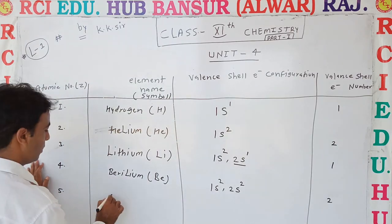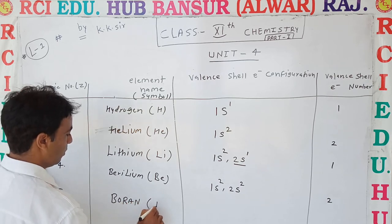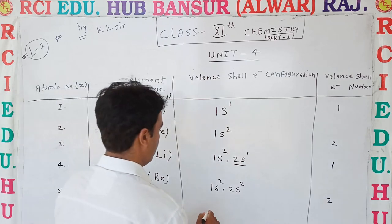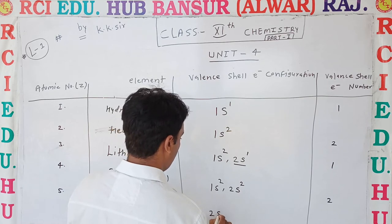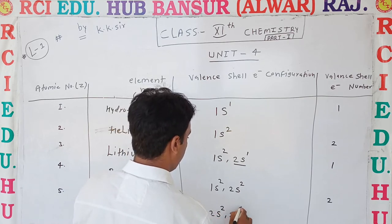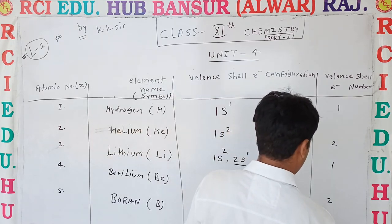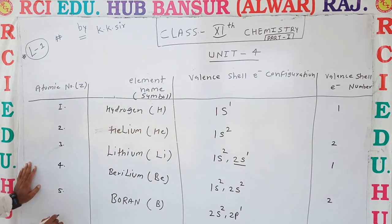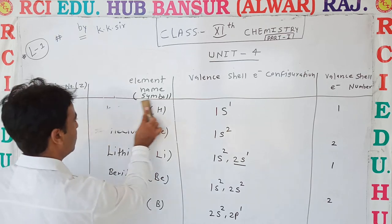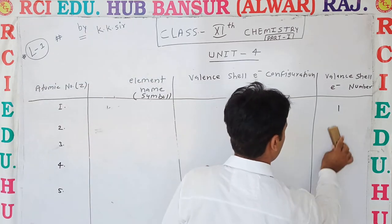Atomic number 5 is Boron, symbol B. Its valence cell electronic configuration is 2s2 2p1, giving a valence cell electron number of 3. These first 13 elements are very useful for us according to their valence cell electrons.